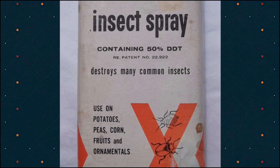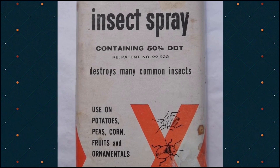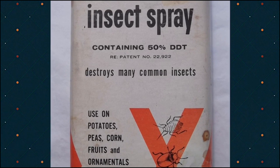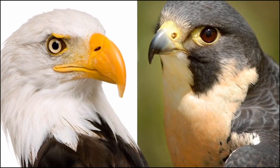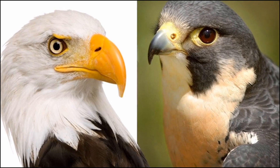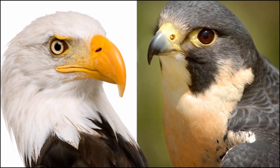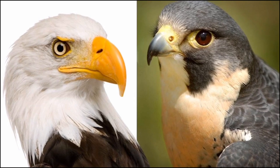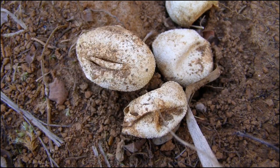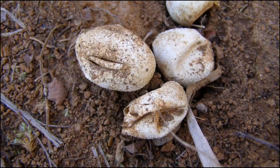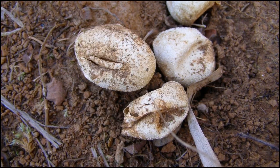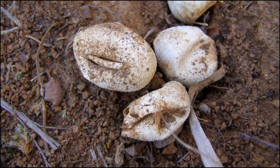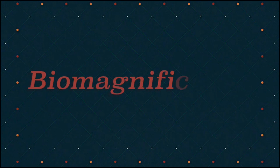DDT however had one major problem that was discovered about 10 years after it started to be used. What they found is that DDT was killing many organisms, especially birds of prey. The DDT reduced the birds' ability to reproduce by making their eggshells very thin, which made them crack easily.